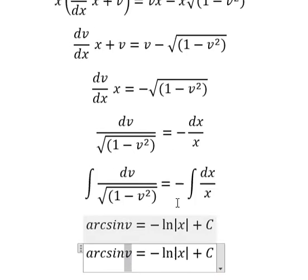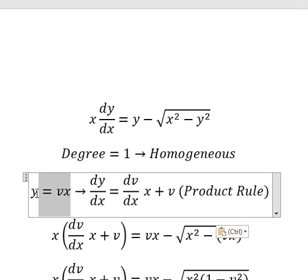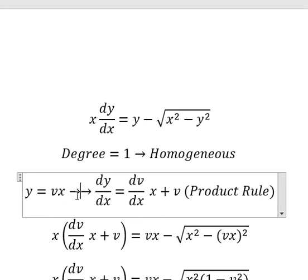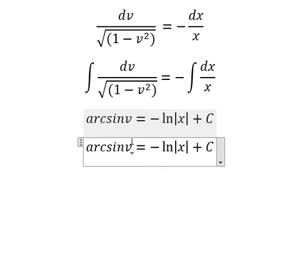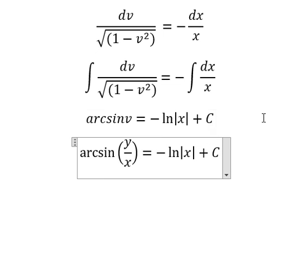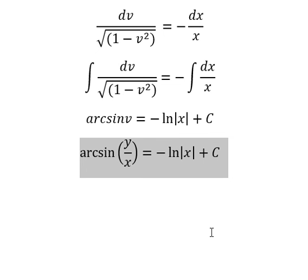About v. That is about this one. So we divide both sides by x. And now we need to change v into this one. And this is the final answer.